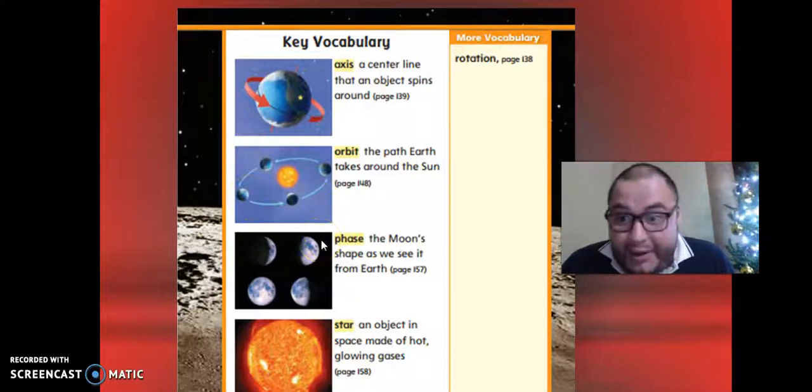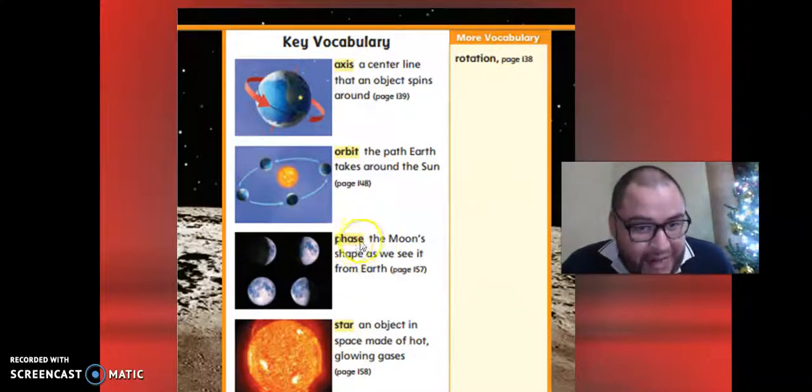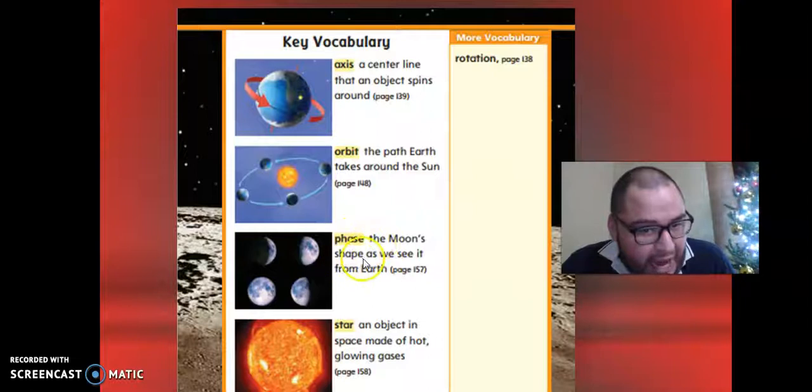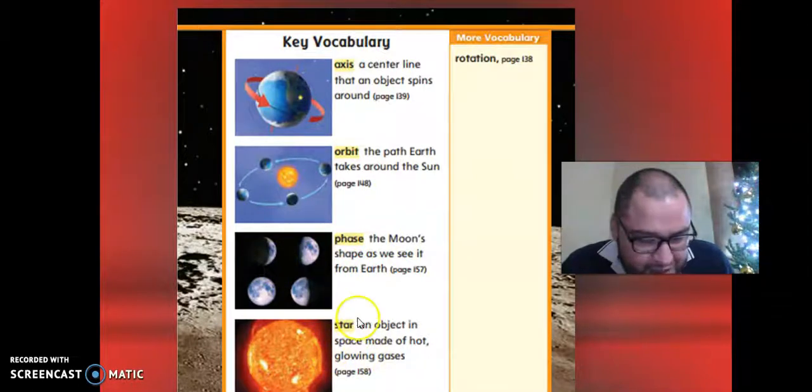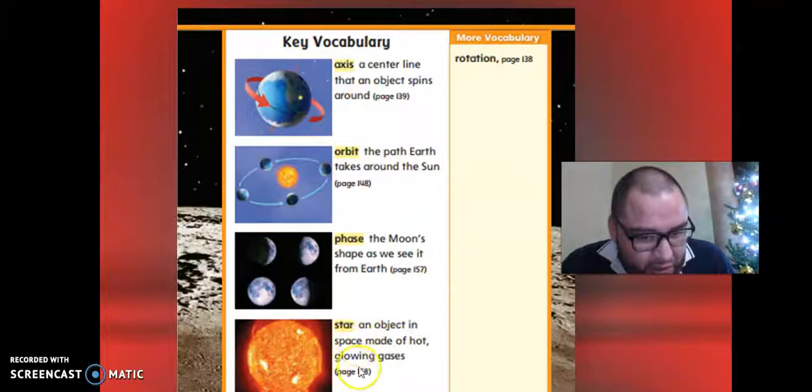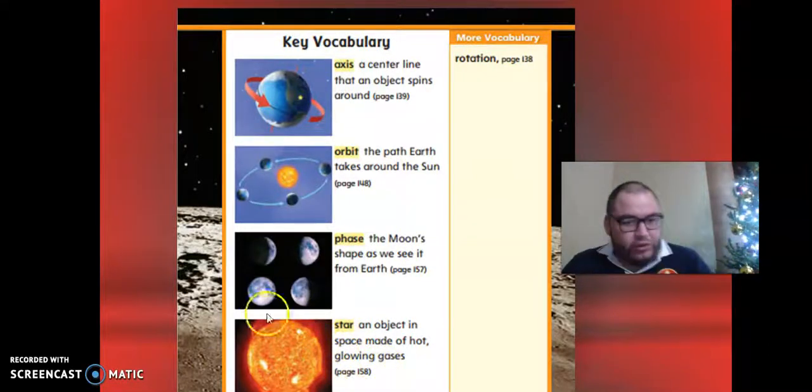In this case, the planet Earth. Phase: for example, the Moon's shapes as we see it from Earth. Those are phases of the Moon.